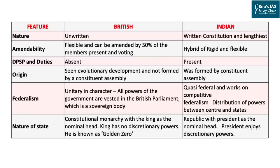Now let us talk about the basic differences, which is where UPSC can frame a question. The first difference is the nature of the constitution. The British constitution is an unwritten constitution — everything ever created by the British Parliament is part of the constitution. On the other hand, the Indian constitution is a written constitution. It is the lengthiest constitution and, being written, it is also a limited constitution. Not every law created by parliament finds a place in the constitution.